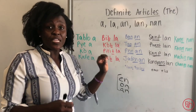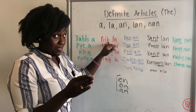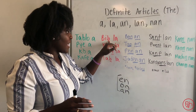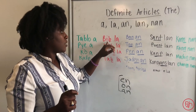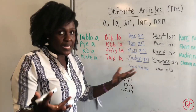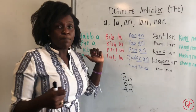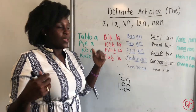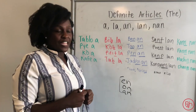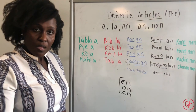Now, if we are ending our word in a consonant — which comes right after a non-nasal vowel — you would use la. Examples: Bib-la, the Bible. Kòb-la, the money. Pitit-la, the child. Tab-la, the table. You see — they're ending in consonants.